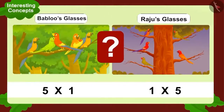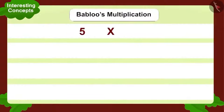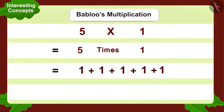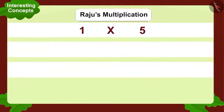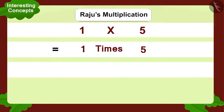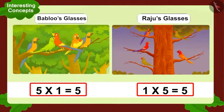Did Raju see the same number of birds as Bablu? Bablu's multiplication: five multiplied by one. Adding one five times gives five birds. Raju's multiplication: one multiplied by five — one time five gives you five. Raju saw as many birds as Bablu; both saw five birds.